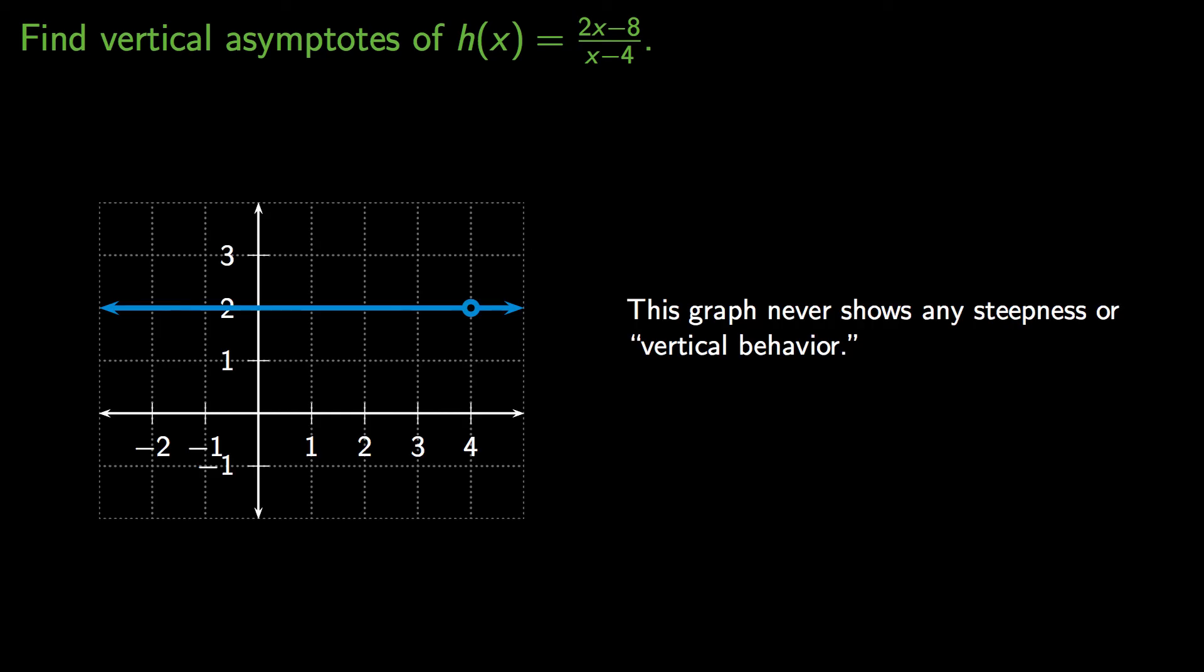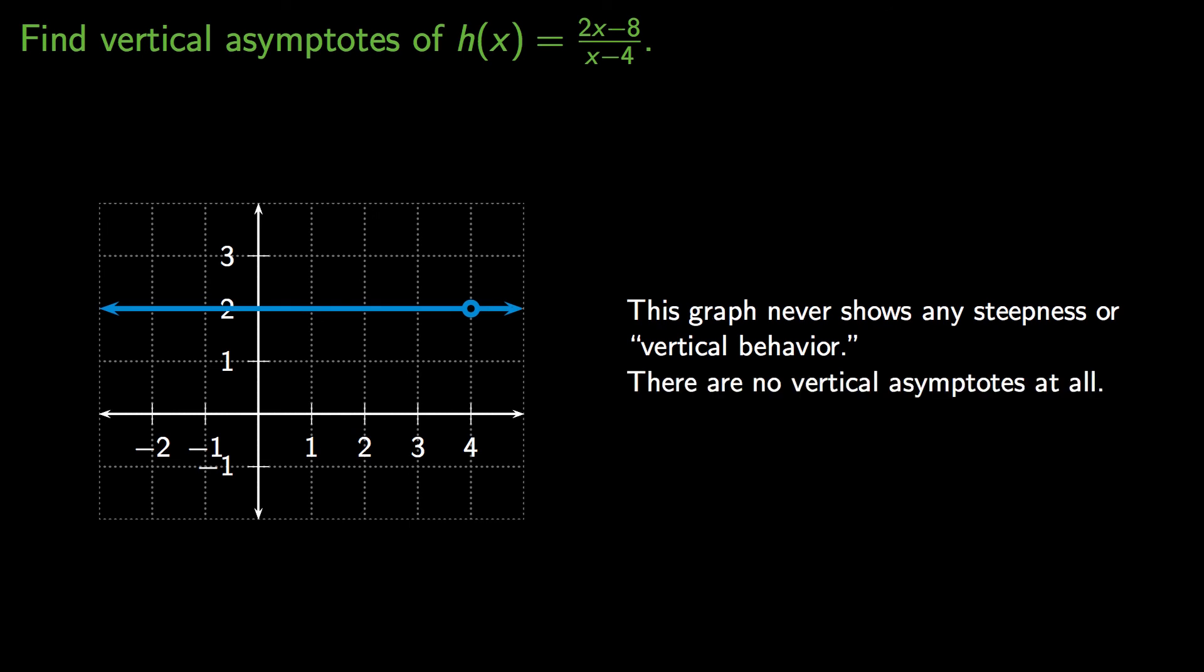So here's the graph of h. h is equal to a horizontal line with this little bubble at coordinates to indicate that when you try to plug the number 4 into this function, you don't get any y value at all. So this graph never actually shows steepness or vertical behavior that you would expect if there was going to be a vertical asymptote. And so looking at this graph, it's pretty obvious that there are no vertical asymptotes to this function at all.